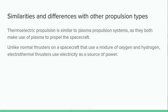Similarities and differences with other propulsion types. Thermoelectric propulsion is similar to plasma propulsion systems, as they both make use of plasma to propel the spacecraft. Unlike normal thrusters on a spacecraft that use a mixture of oxygen and hydrogen, electrothermal thrusters use electricity as a source of power.